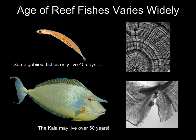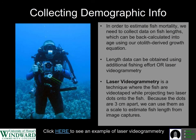What we've found from age-growth analyses is that age and longevity of reef fishes varies widely between taxonomic groups. Really small-bodied fishes like gobies and triple fins tend to live very short lifespans — for example, Schindleria is a goby that really only lives 40 to 50 days. On the other hand, the kala, a unicornfish common in Hawaii, may live over 40, 50, maybe even 60 years. This has important management implications: fish that live a long time and mature at a very old age tend to be more prone to overfishing than fish with shorter lifespans and earlier maturity.